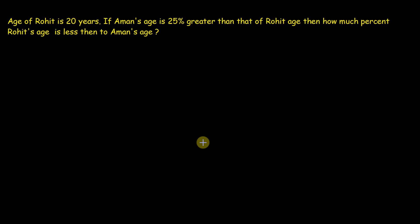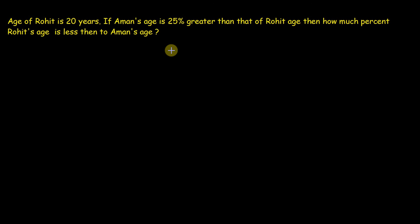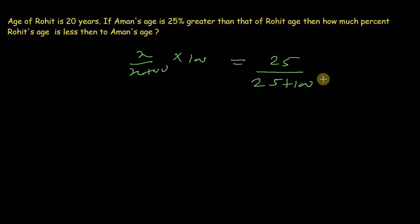The first question is: the age of Rohit is 20 years. If Amoung's age is 25 percent greater than that of Rohit's age, then how much percent is Rohit's age less than Amoung's age? In other words, how much percent do we decrease Amoung's age to get Rohit's age? This is the same scenario as our formula. Using X/(X+100) multiplied by 100 percent, where X is 25, we get: 25 divided by (25 plus 100), multiplied by 100 percent, which equals 20 percent.